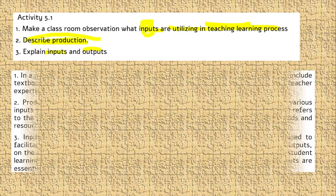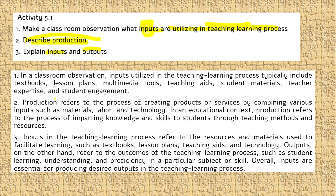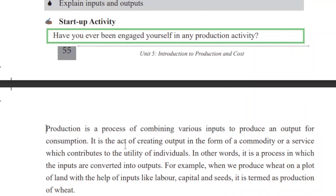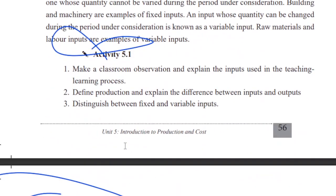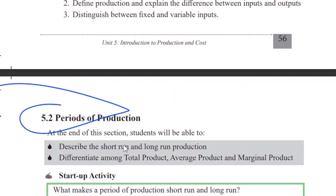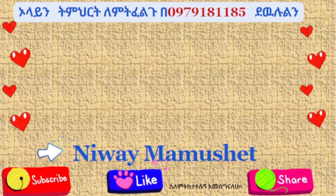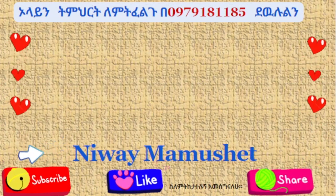Active learning Activity 5 — we are going to talk about the period of production and the period of production in the middle of the year. We are going to talk about this.